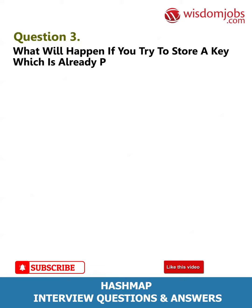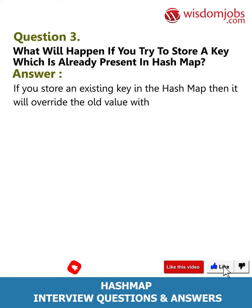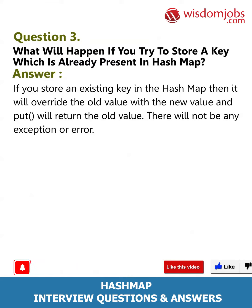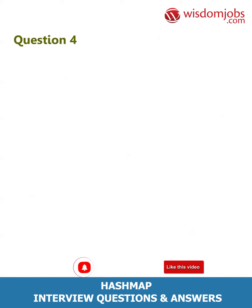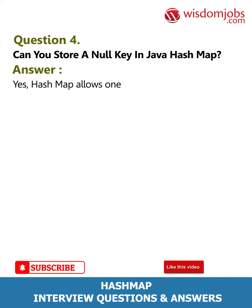Question 3: What will happen if you try to store a key which is already present in HashMap? Answer: If you store an existing key in the HashMap, it will override the old value with the new value and will return the old value. There will not be any exception or error.